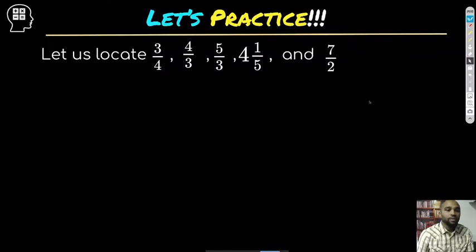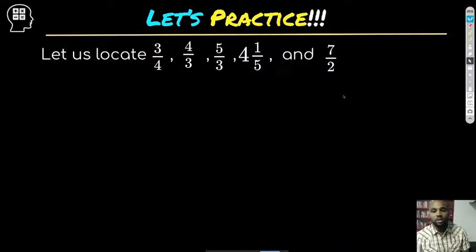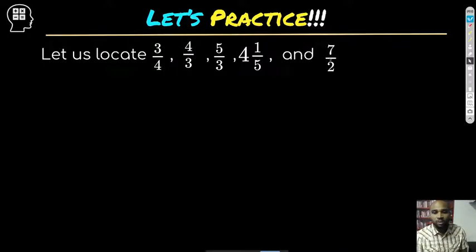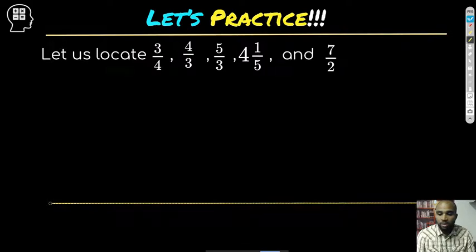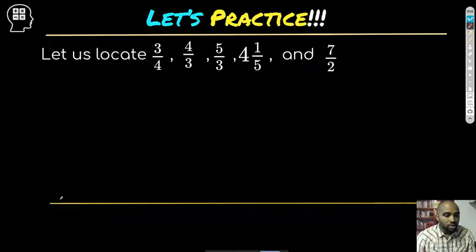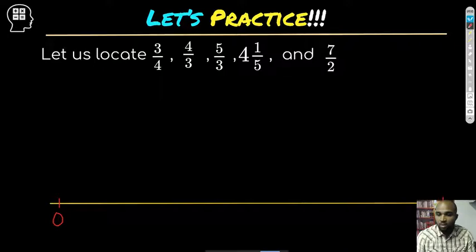Let's practice this one. I would love for you to pause here and try to work this yourself. The easiest thing to do is make sure you get the whole range — we want to go from at least zero because we don't have any negative numbers, and all the way up to at least four. Four and one fifth means we should go to at least five or six. I'm starting with zero and I will go to five.